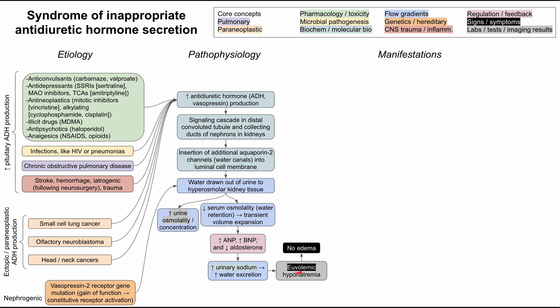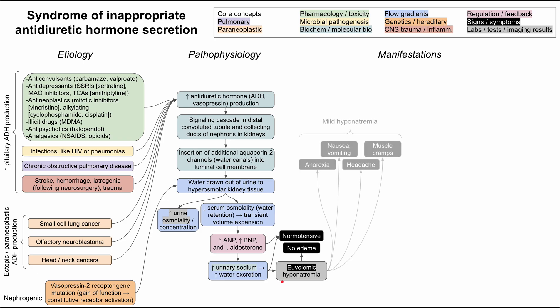The fact that this is euvolemic is clinically significant. It means the patient won't have edema. So if a patient presents with hyponatremia and leg swelling, or hyponatremia and fluid in the lungs, you'll need to look for another source — heart failure should be considered. In addition, all of this feedback usually results in the patient being normotensive. So somebody presenting with SIADH will have no edema, normal blood pressure, and a euvolemic hyponatremia on their complete metabolic panel.